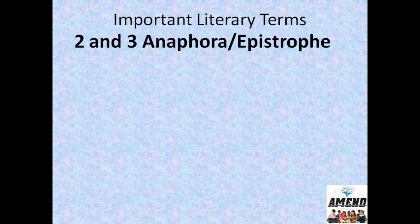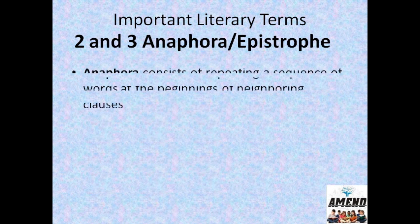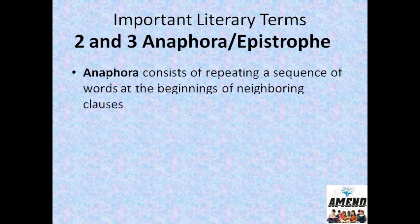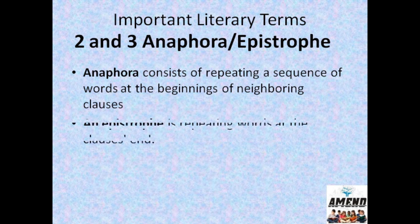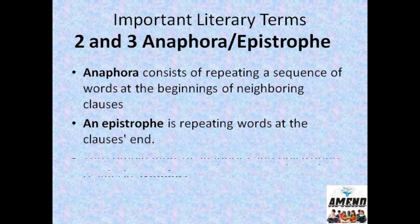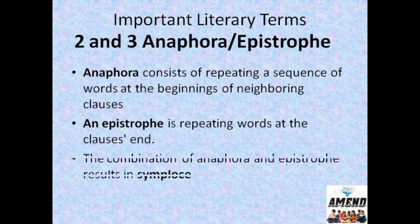Now we will do anaphora and epistrophe, because they are both connected as opposite terms. In rhetoric, anaphora is a rhetorical device that consists of repeating a sequence of words at the beginning of neighboring clauses, thereby lending them a certain kind of emphasis. In contrast, epistrophe is repeating words at the clause end or at the sentence end. The combination of anaphora and epistrophe results in symploce.